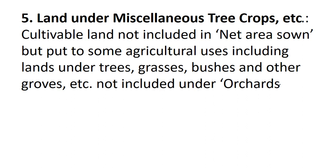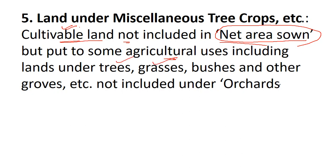The fifth category is land under miscellaneous tree crops. This includes cultivable land that is not included in the net sown area but is put to some agricultural use — including lands under trees, grasses, bushes, and other growth — such as casuarina trees, thatching grasses, bamboo bushes, and other grows for fuel, which are not included under orchards.